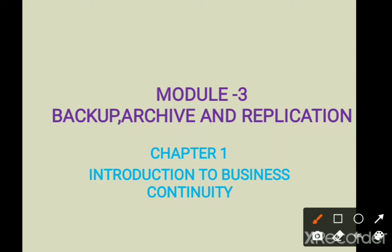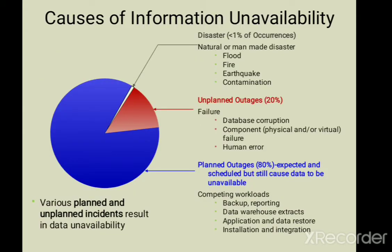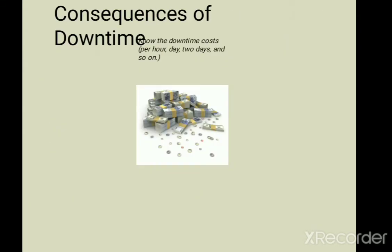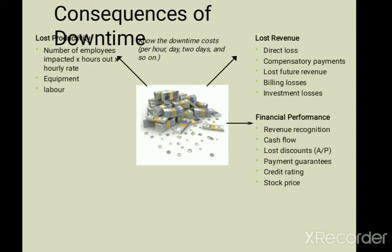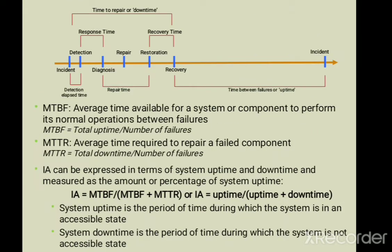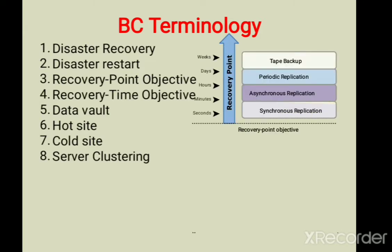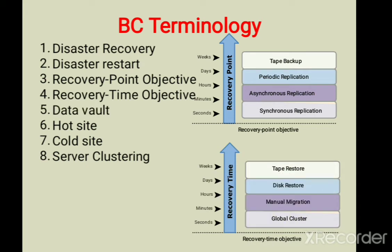Welcome to today's class. In the previous class we covered Module 3, which is related to concepts such as backup, archive, and replication. We came across the terms of information availability, the causes for information unavailability, the consequences of downtime, how to measure information availability, and terminologies related to business continuity such as disaster recovery, disaster restart, recovery point objective, and recovery time objective.